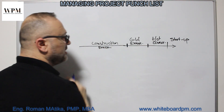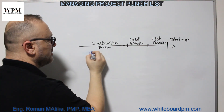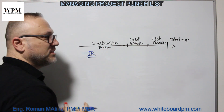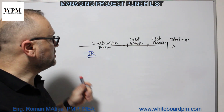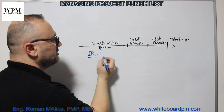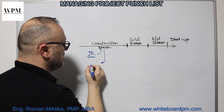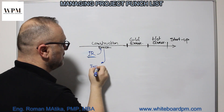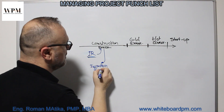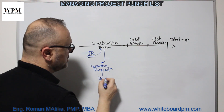Once we are in the construction phase, there are IRs — inspection requests — submitted to the client to make sure the client is inspecting everything and giving comments. The comments are given through an inspection request, and it is the IR punch list.